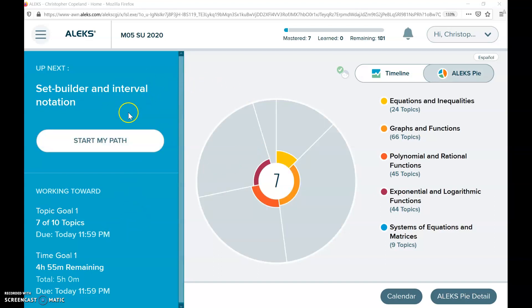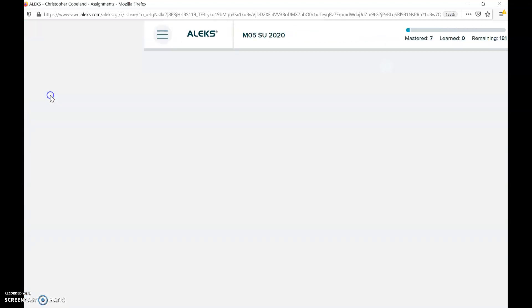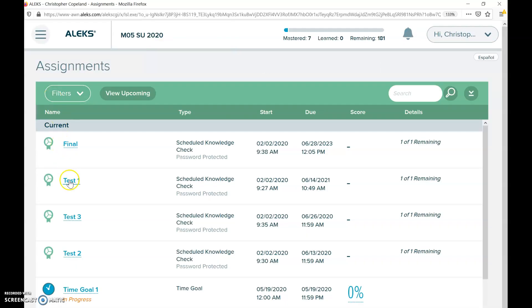All right, this is the home screen. You are going to click these triple bars, go down to assignments, click the test or the final that you're going to take.